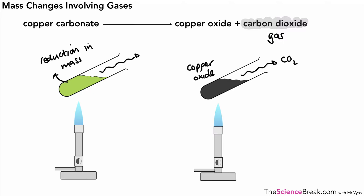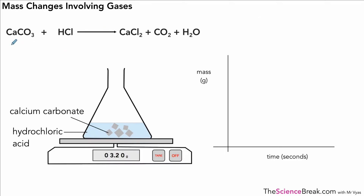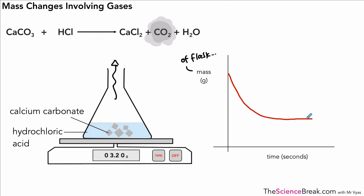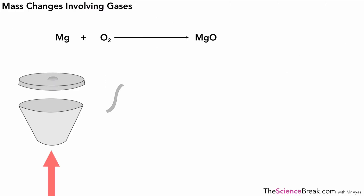Here calcium carbonate reacts with hydrochloric acid to give calcium chloride, carbon dioxide, and water. We measure the loss in mass of the flask and its contents. Plotting a graph, the mass reduces and eventually levels out as the reaction stops — it seems like mass is lost. But the green line, representing the total mass of calcium chloride, carbon dioxide, and water combined, shows the mass is actually conserved. We must not be fooled when one of the products is a gas.